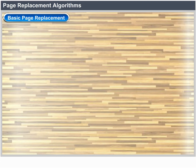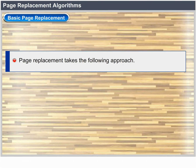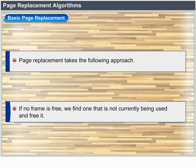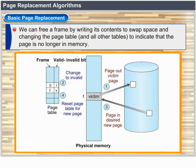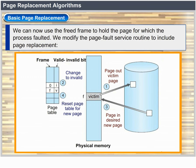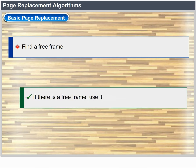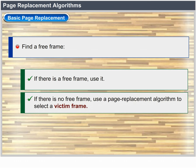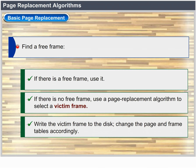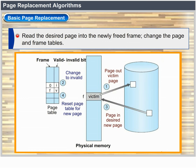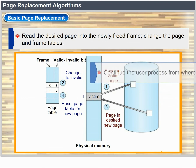Basic Page Replacement. Page replacement takes the following approach: if no frame is free, we find one that is not currently being used and free it. We can free a frame by writing its contents to swap space and changing the page table to indicate that the page is no longer in memory. We then use the freed frame to hold the page for which the process faulted. The page fault service routine is modified to: find the location of the desired page on disk; find a free frame (or use a page replacement algorithm to select a victim frame); write the victim frame to disk; read the desired page into the newly freed frame; and continue the user process.